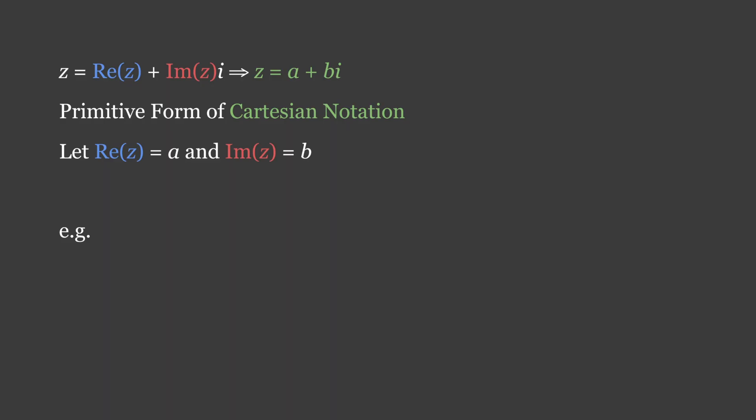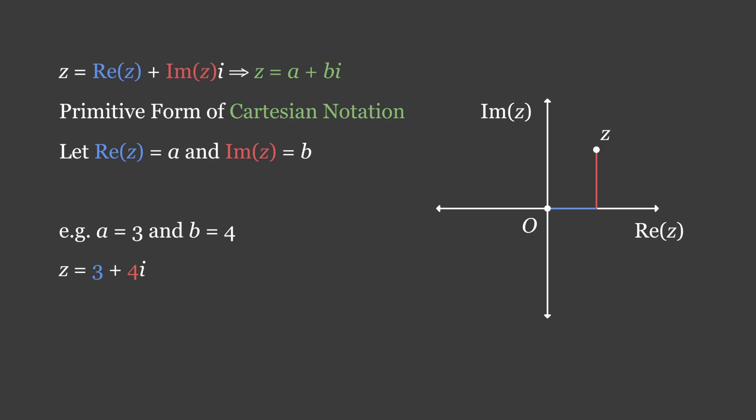For example, if a equals 3 and b equals 4, we could denote z as 3 plus 4i. This form allows us to denote complex numbers with mixed parts, and to then visualize them on the complex plane.